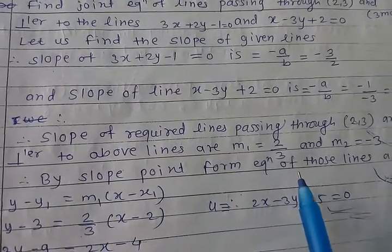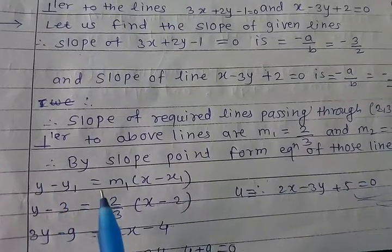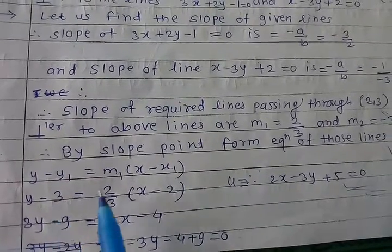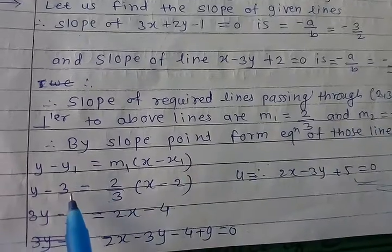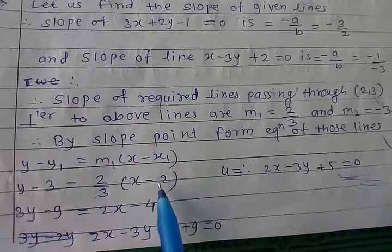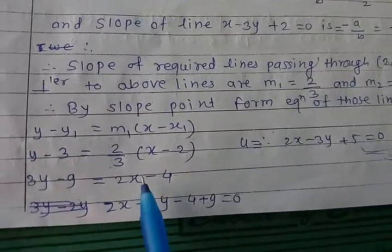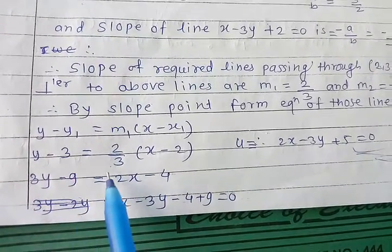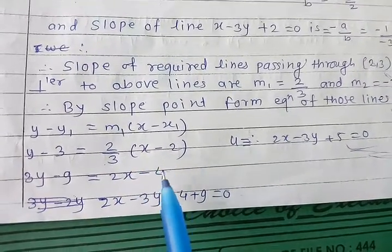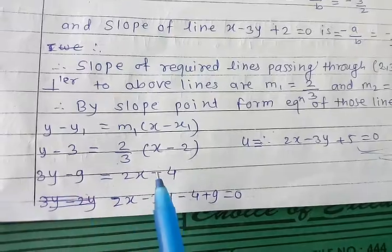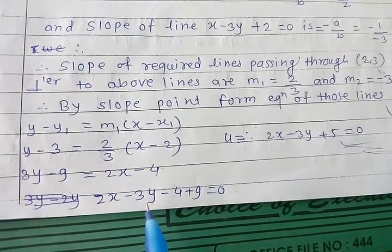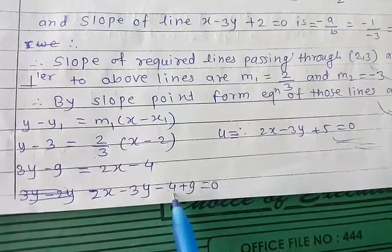Using the slope-point form, the first line through (2, 3) with slope m1 = 2/3: y − 3 = (2/3)(x − 2). Multiplying through by 3: 3y − 9 = 2x − 4. Rearranging: 2x − 3y + 5 = 0. This is the first equation u.